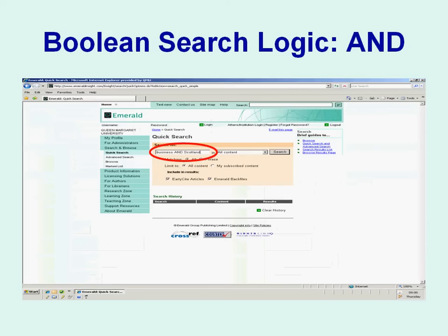Some databases will expect you to type in your operators. The example given here is the quick search option of the Emerald database. The more databases you use, the more you will find that although there are slight differences between them, they all follow the same general principles. Look for the online help available in most databases to help you make the best use of the database when searching.